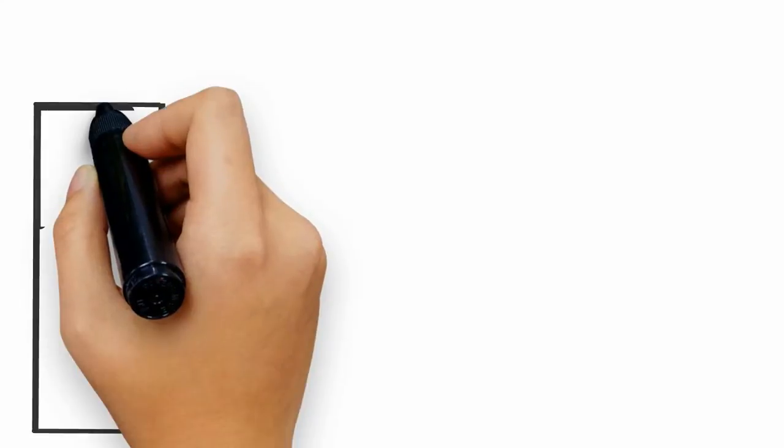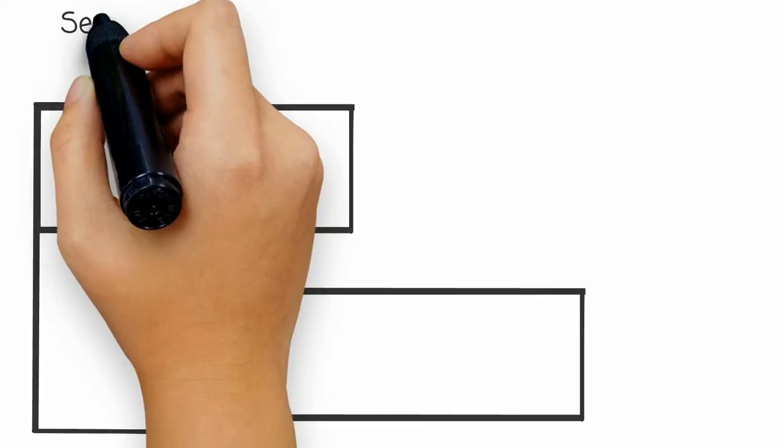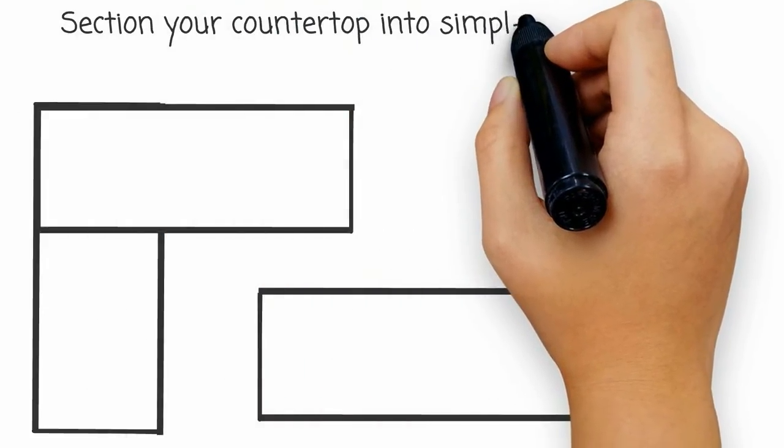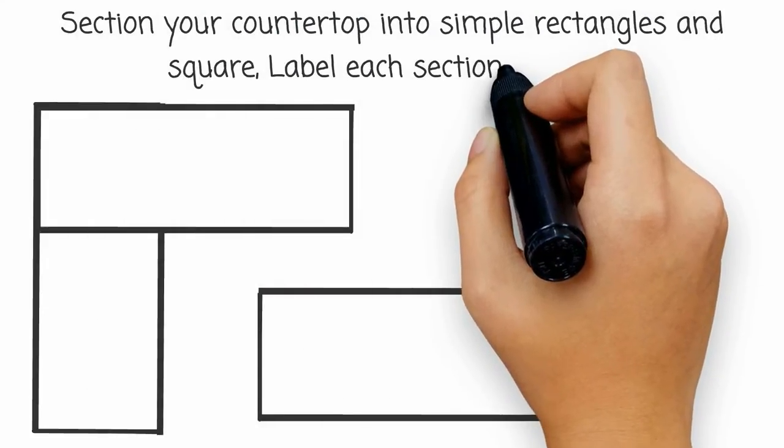The most common shapes are L-shaped. Be sure to label an island as well. Section your countertop into simple rectangles and squares, and label each section A, B, and C.